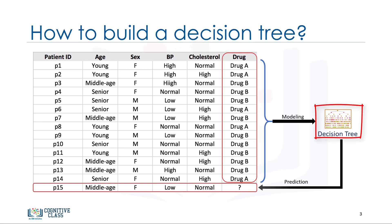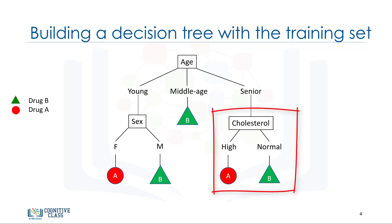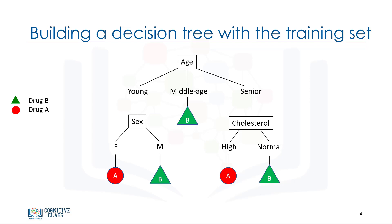Let's see how a decision tree is built for this data set. Decision trees are built by splitting the training set into distinct nodes, where one node contains all of, or most of, one category of the data. If we look at the diagram here, we can see that it's a patient classifier. As mentioned, we want to prescribe a drug to a new patient, but the decision to choose drug A or B will be influenced by the patient's situation.